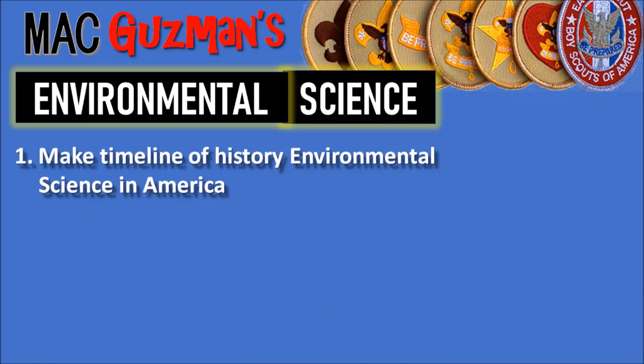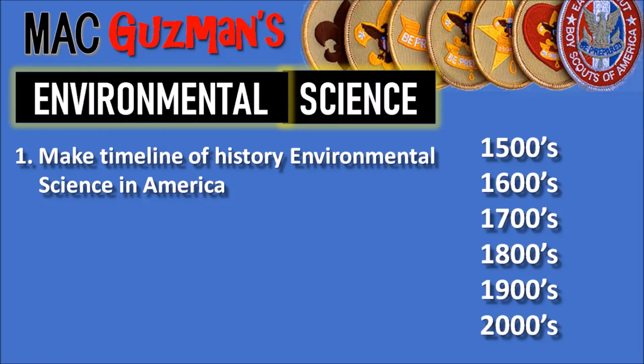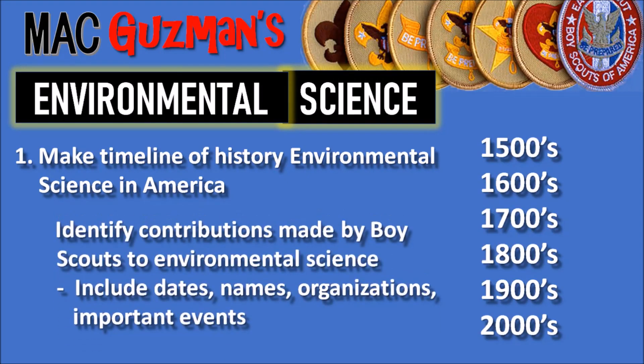Number one says to make a timeline of the history of environmental science in America, from the 1500s, 1600s, and so on up to the 2000s. You're supposed to identify contributions made by Boy Scouts to environmental science, and include dates, names, organizations, and important events.